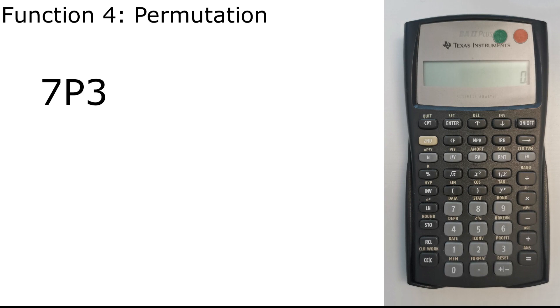And for my 4th tip or the 4th function is how to calculate the permutation. So what we do is we press 7, then we press 2nd, the minus which is nPr, then we press 3, equal. 210.